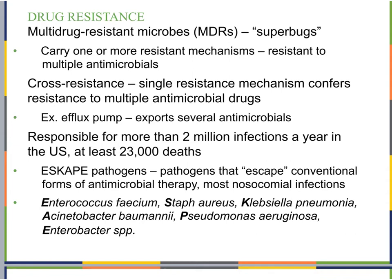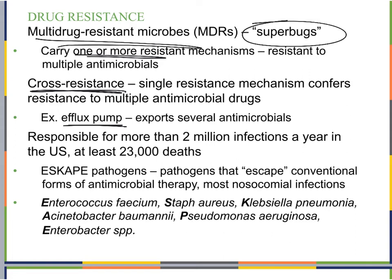Now let's look at multi-drug-resistant microbes — superbugs. Bacteria can carry one or more resistance mechanisms. When something is resistant to multiple antimicrobials, they're called superbugs because there are many things that cannot kill them. We see cross-resistance, where a single resistance mechanism like an efflux pump confers resistance to multiple antimicrobial drugs. When transferred to a new bacterium, it can immediately become multi-drug resistant. This is responsible for more than 2 million infections a year in the United States and at least 23,000 deaths.